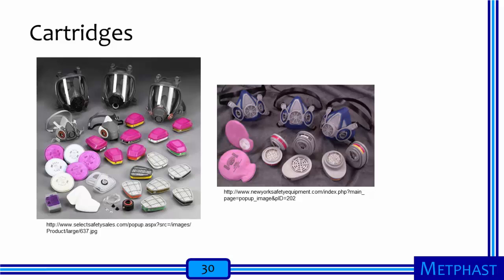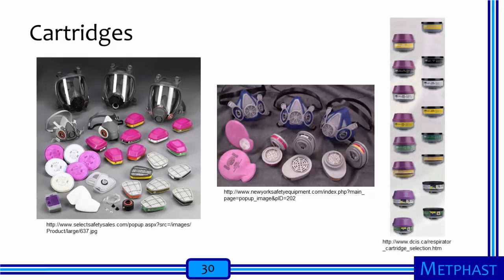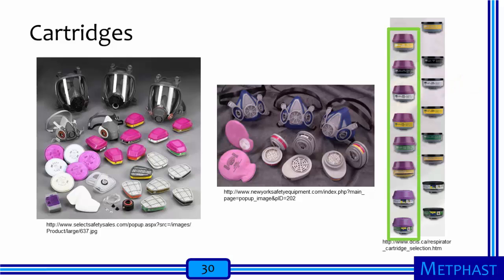Cartridges are color-coded according to the material removed. The color magenta or pink designates P100 filters, the highest efficiency category for respirator filters. Less efficient filters are generally white. Cartridges containing sorbents are also color-coded: black labels indicate organic vapors, while white labels indicate acid gases. Combination cartridges can have P100 filters designated by magenta along with a sorbent layer underneath, allowing simultaneous protection against particles and certain gases or vapors.